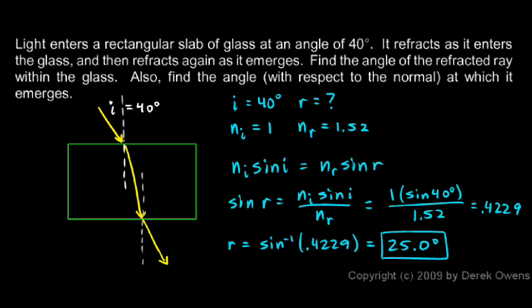The trick to solving the second part is realizing that the refracted ray from the first refraction becomes the incident ray for the second refraction. So now the incident ray is in glass and the refracted ray is in air. For the second refraction, n_I will be 1.52 (glass) and n_R will be 1 (air).